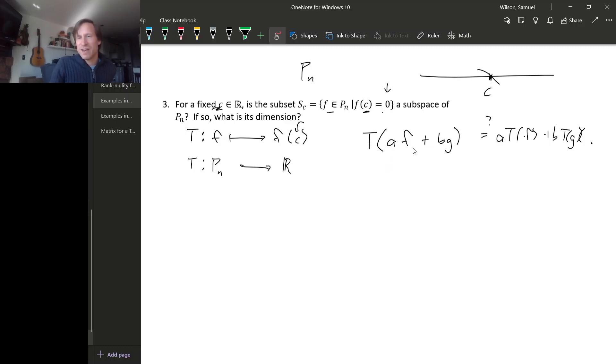Well, T of AF plus BG, this is AF plus BG evaluated at the number C, but what is that? Well, it's A times F of C plus B times G of C, right? This is the definition of vector addition and scalar multiplication in the vector space P sub N. What about this side? But that's exactly the same thing. So this function is a linear transformation since it satisfies the characteristic property of linear transformations.